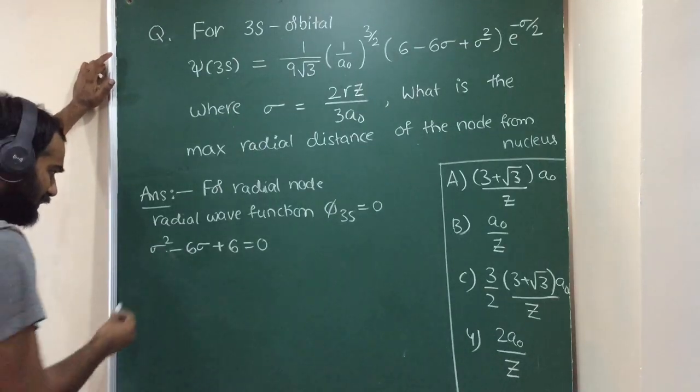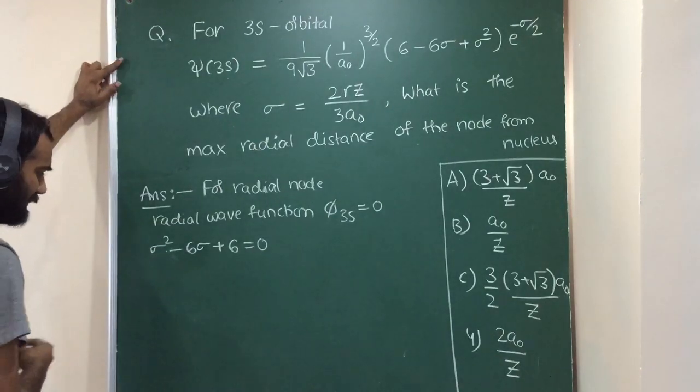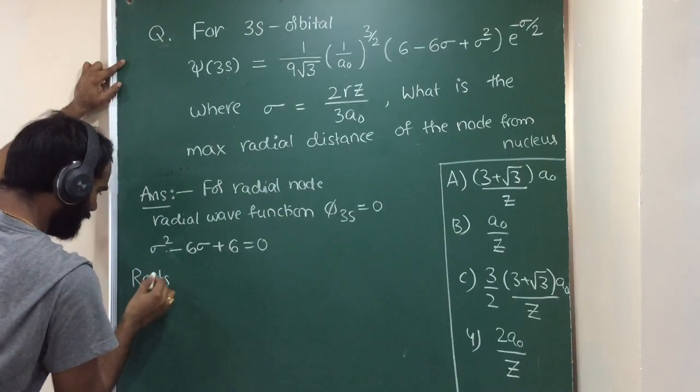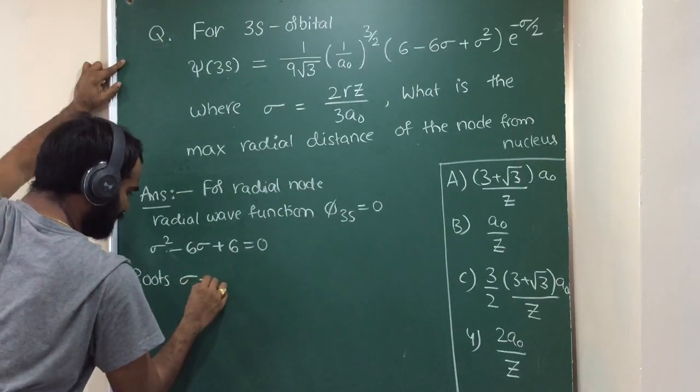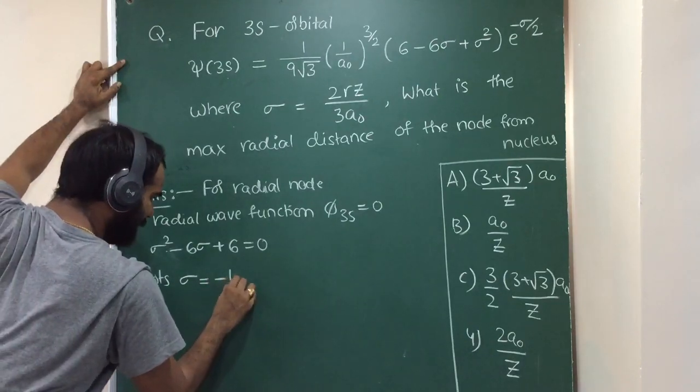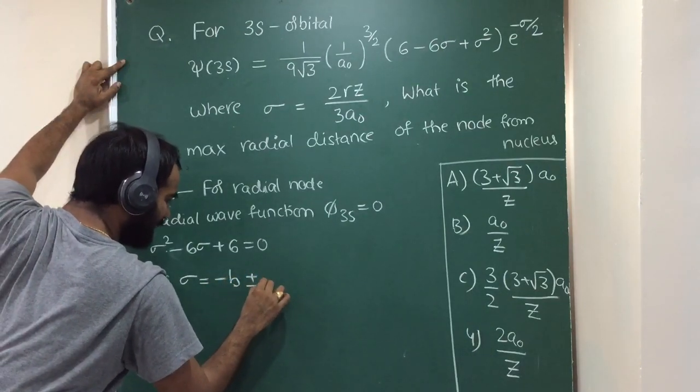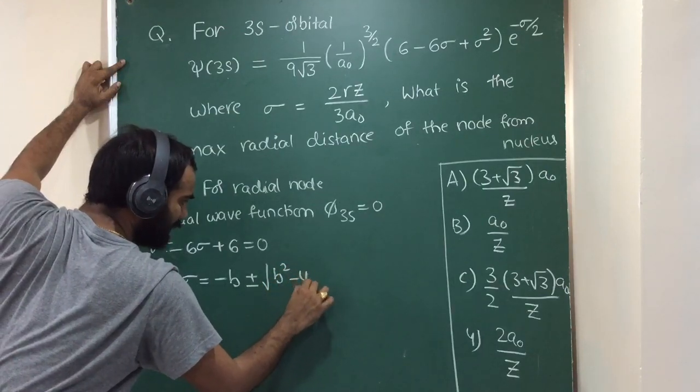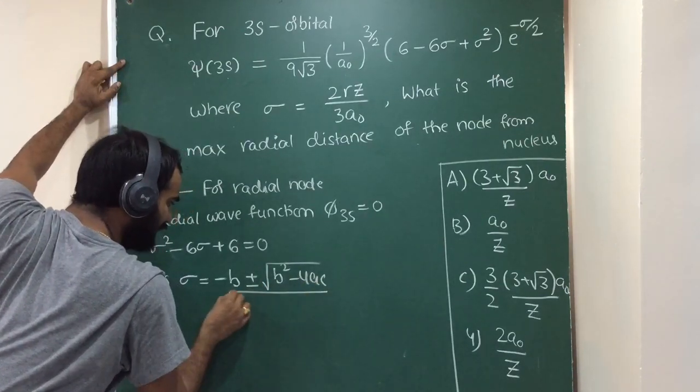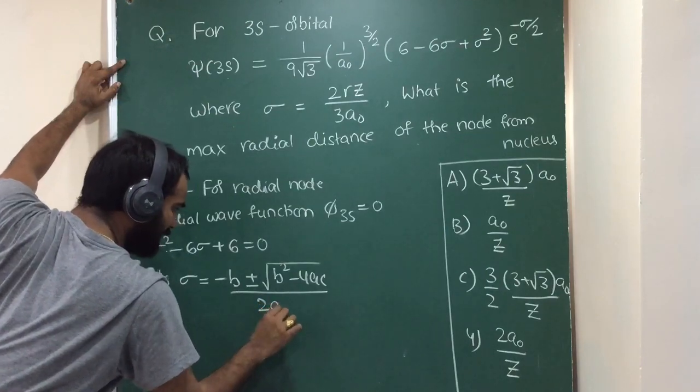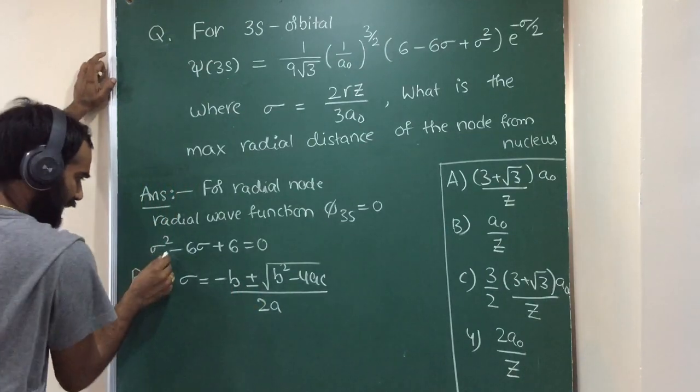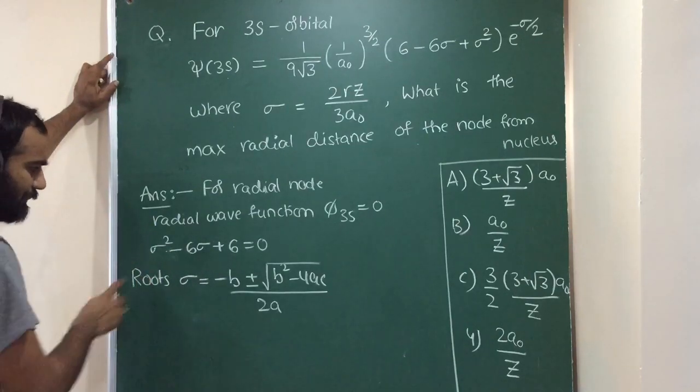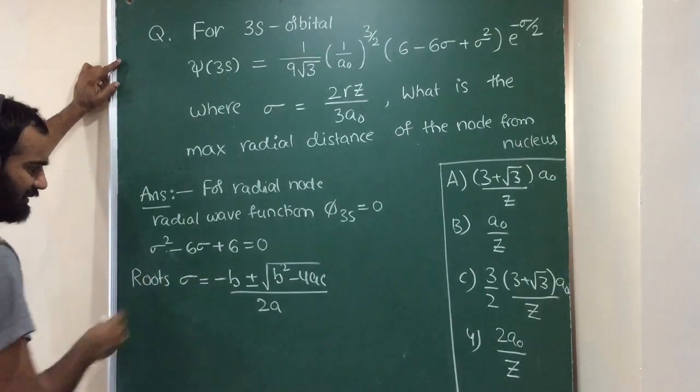Now calculate the roots of the above algebraic equation. The roots: sigma equals minus b plus or minus root b square minus 4ac by 2a. From the above algebraic equation, a equals 1, b equals minus 6, c equals 6.